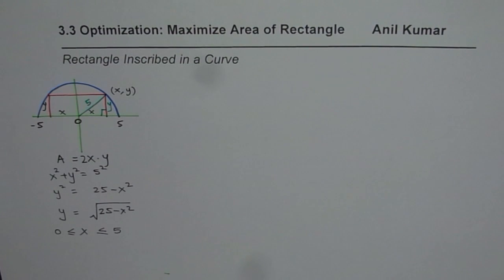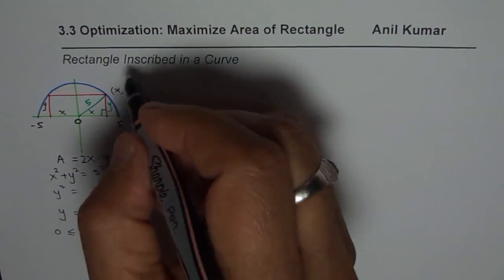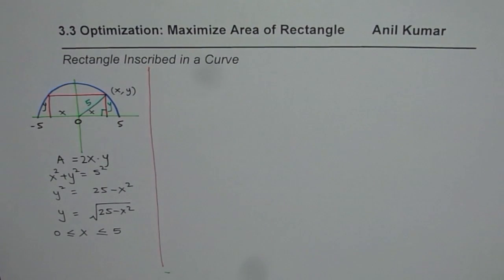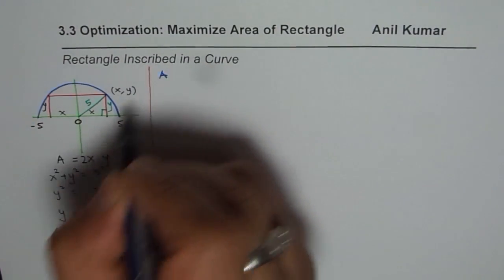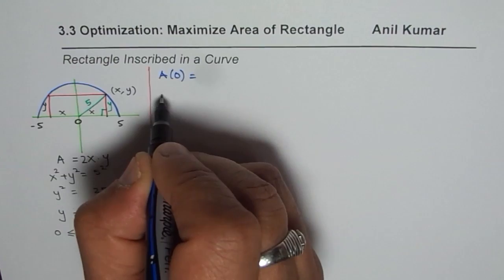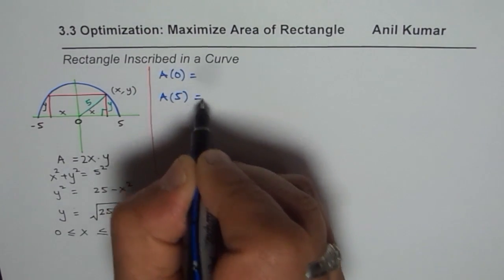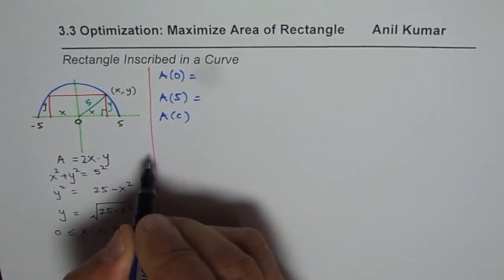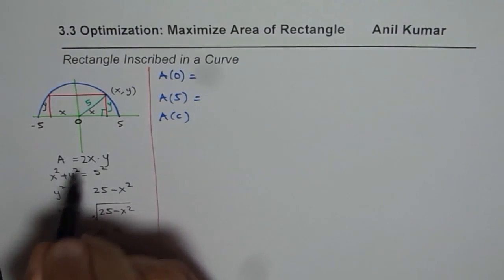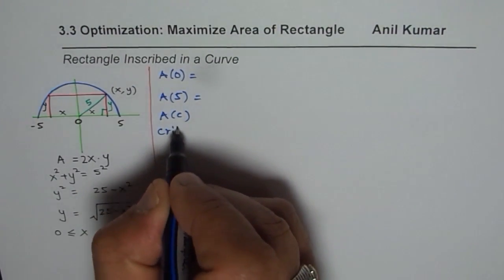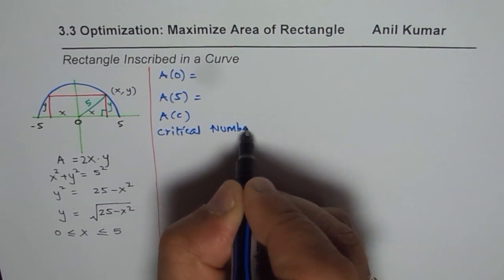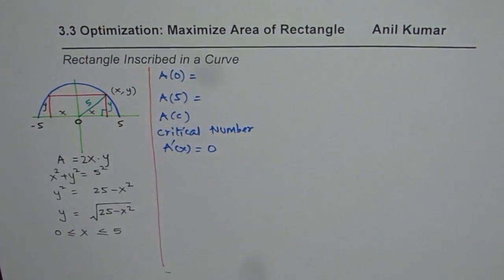It is very important to consider the boundary conditions. In optimization problems, whenever we need to optimize, we have to check values at the boundary conditions and at the critical point. So what you need to find is the area when x = 0, the area when x = 5 — those are the boundary conditions — and then the area at the critical point. The critical point is when the derivative is 0, i.e., when the rate of change of area is 0. At that point we may have the maximum area of the rectangle.